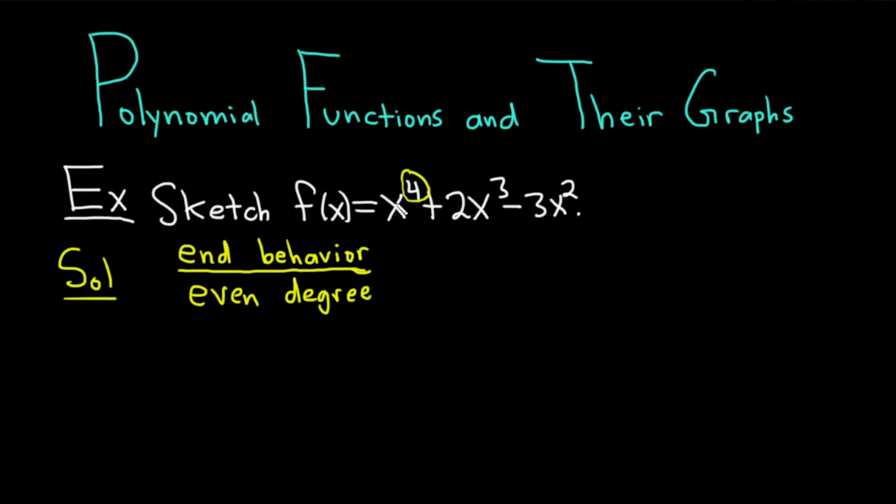And the leading coefficient is the number in front of the term of highest degree. In this case, there's a 1 here. What matters is that it's positive. So we have a positive leading coefficient. Then there's something called the leading coefficient test, or some books call it the end behavior test, which says that whenever you have an even degree and a positive leading coefficient, your end behavior is rises left and rises right.